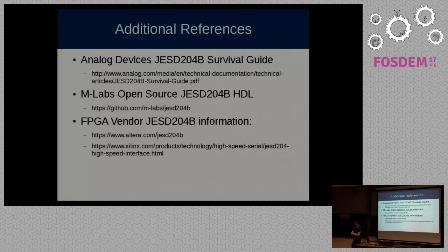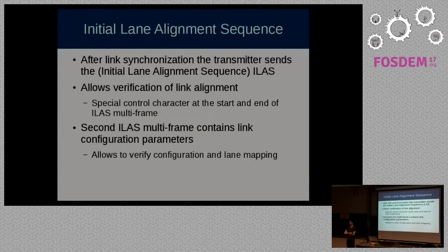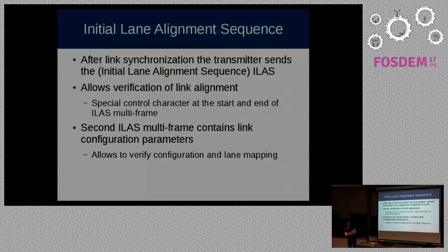Question: When the receiver de-asserts the sync line, does the transmitter also send configuration parameter information? Yes — there is a so-called initial lane alignment sequence in which the full configuration parameters are sent over the link. However, typically you program them on both sides via a separate channel such as SPI or I2C.